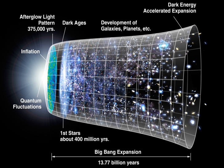In the cyclic model, the Big Bang was preceded by a big crunch and the universe cycles from one process to the other. Eternal inflation proposes that universal inflation ends locally here and there in a random fashion, each endpoint leading to a bubble universe expanding from its own Big Bang. Proposals in the last two categories see the Big Bang as an event in either a much larger and older universe, or in a multiverse.